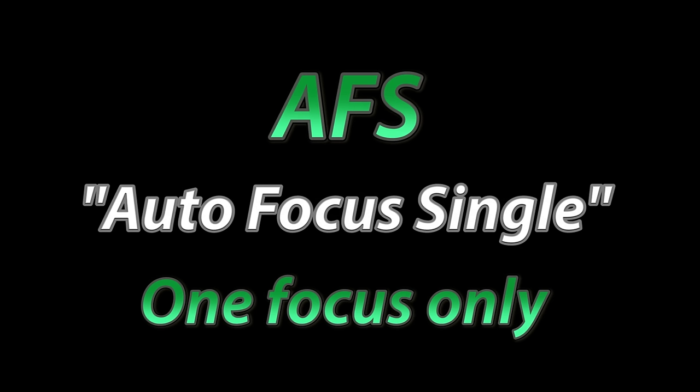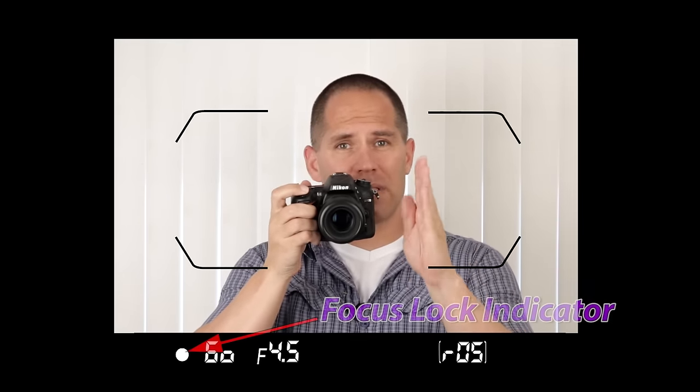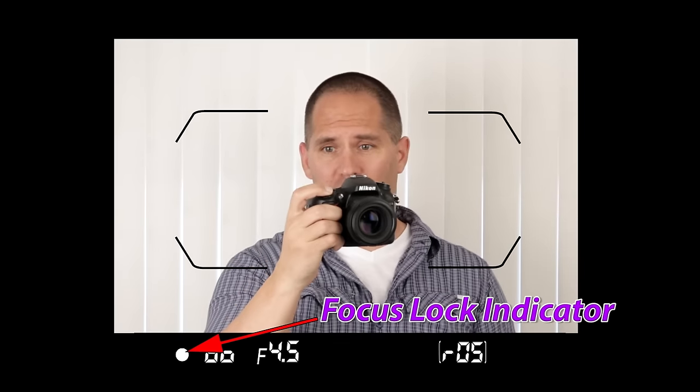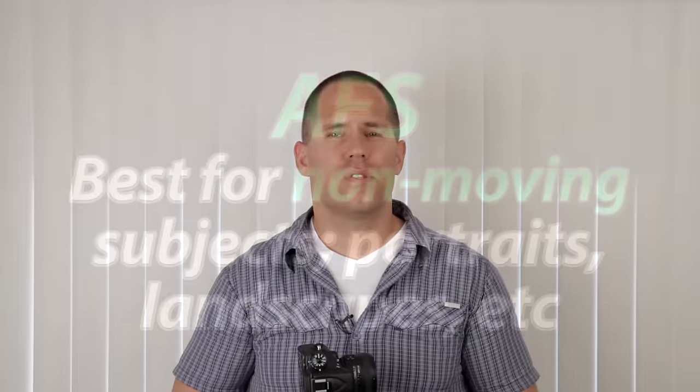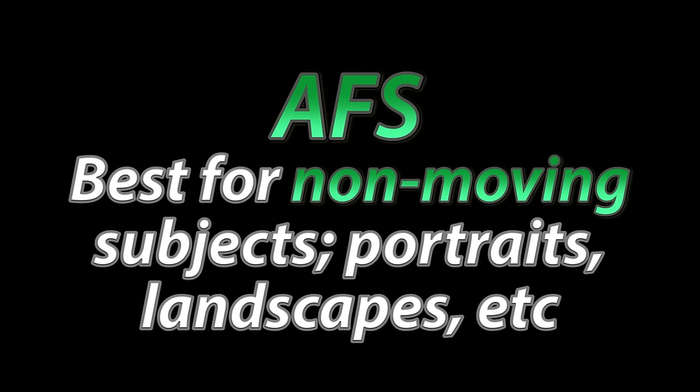AFS stands for autofocus single servo. What that means is when you push the shutter button halfway down, the camera is going to focus one time. If you push the shutter button halfway down and hold it, the camera will get focus lock and it'll stay locked. This is going to be very useful for shooting portraits, still subjects, landscapes, things that don't move.